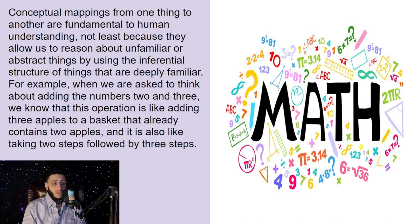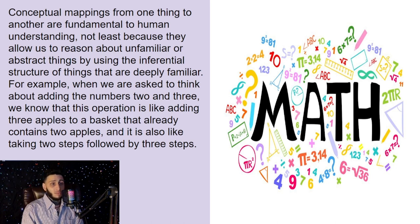Conceptual mappings from one thing to another are fundamental to human understanding, not least because they allow us to reason about unfamiliar or abstract things by using the inferential structure of things that are deeply familiar. For example, when we are asked to think about adding the numbers 2 and 3, we know that this operation is like adding 3 apples to a basket that already contains 2 apples, and it is also like taking 2 steps followed by 3 steps.